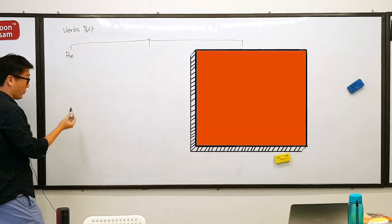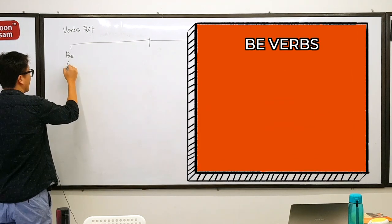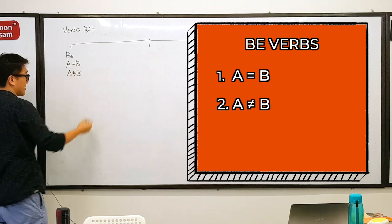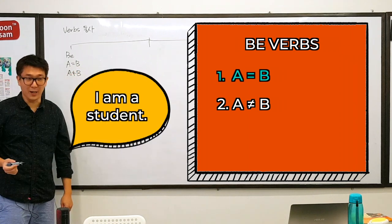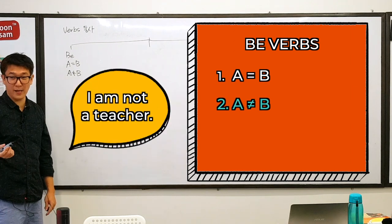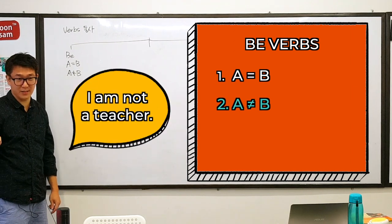Be-verb. What was the be-verb that you have learned? A equals B structures. A equals not B structures. I am a student. That's be-verb, right? I am not a teacher. Be-verb.